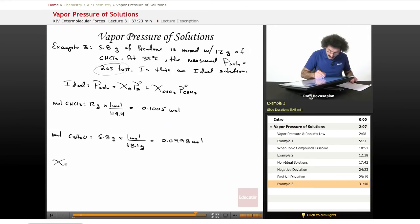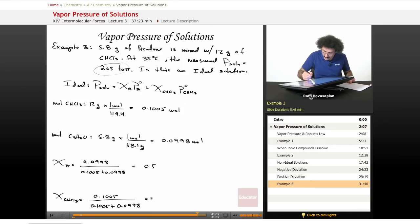Therefore, the mole fraction of acetone is equal to 0.0998 divided by 0.1005 plus 0.0998. And the mole fraction of the CHCl3 is equal to 0.1005 divided by 0.1005 plus 0.0998. And you end up with 0.5. So the mole fraction of each is 0.5.